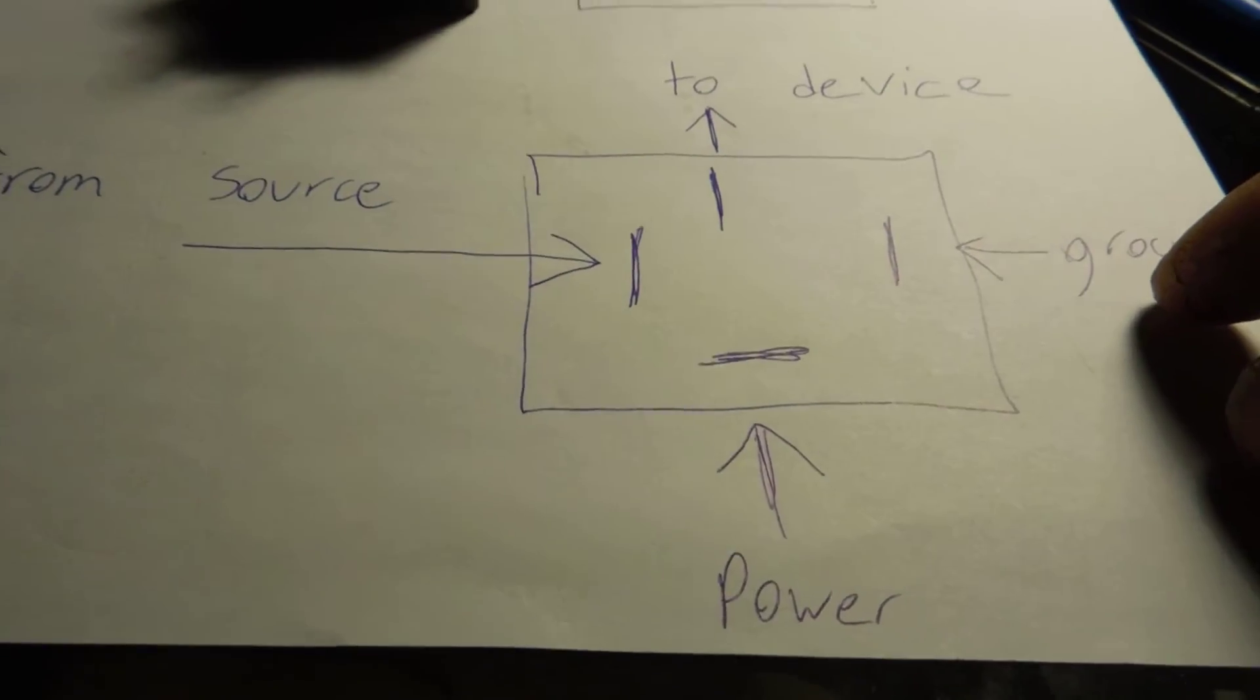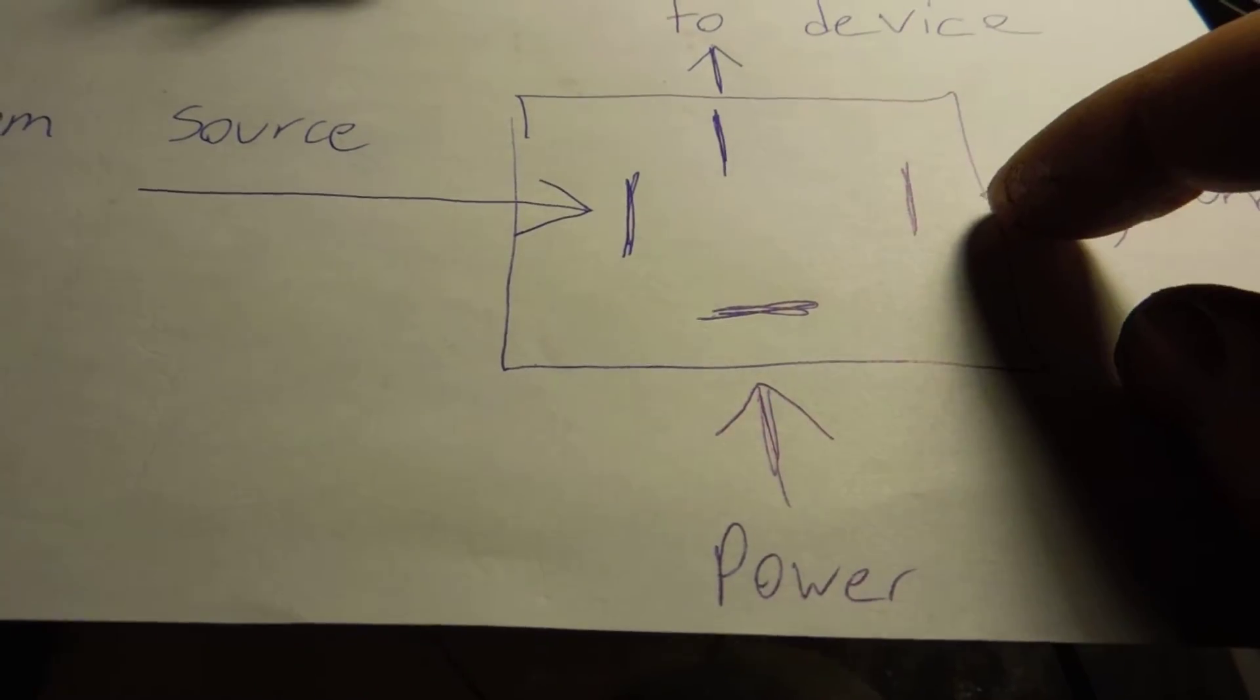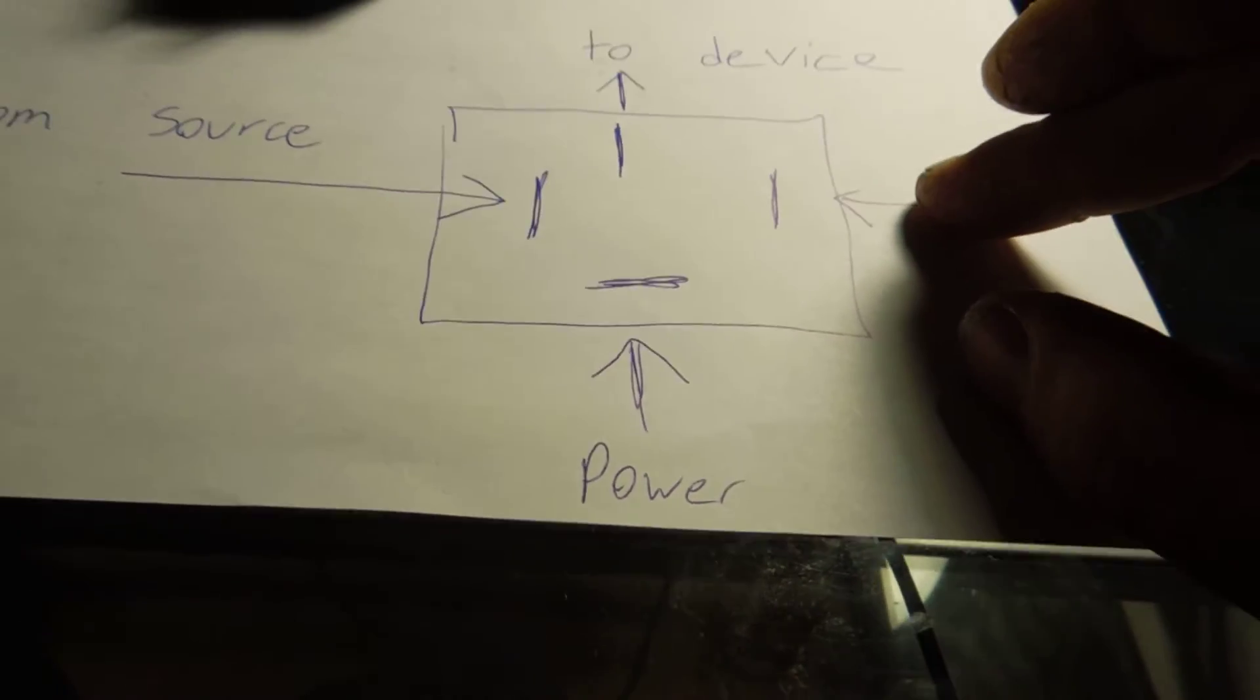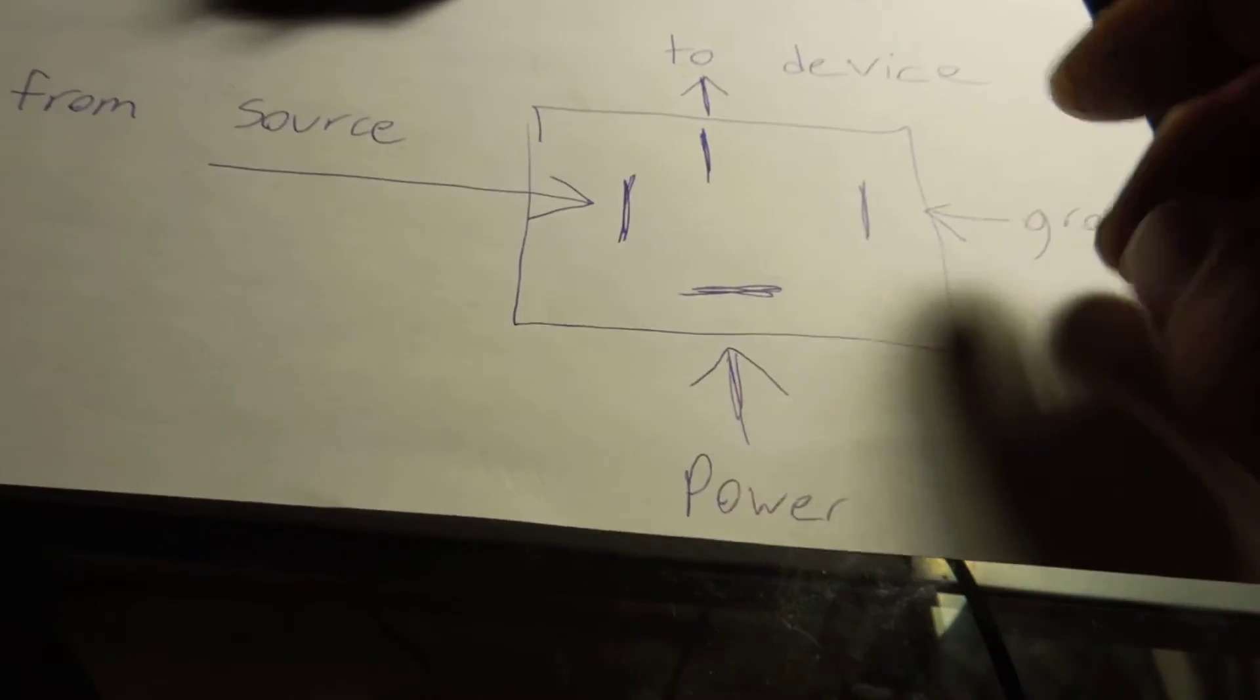So you would have to have on pin 86 this would be your negative trigger, so it would be right here, or it could be on this side once again, and then you'd have to have positive on the other side of it to activate it.